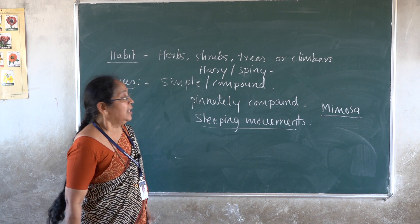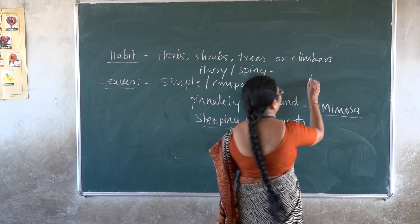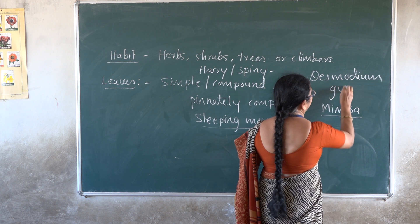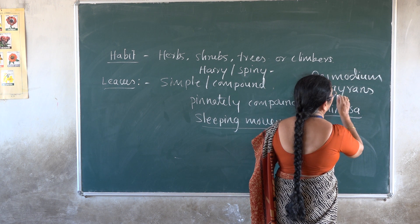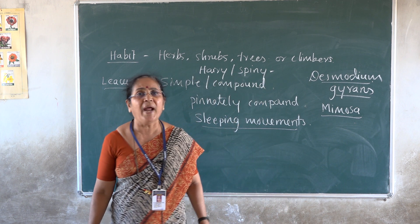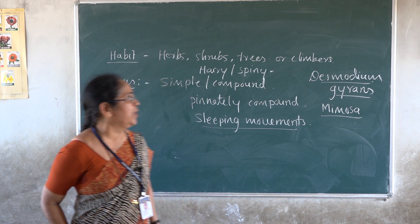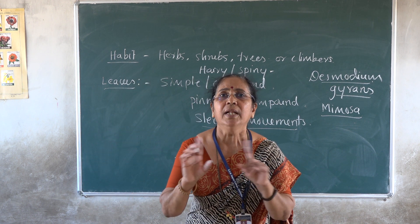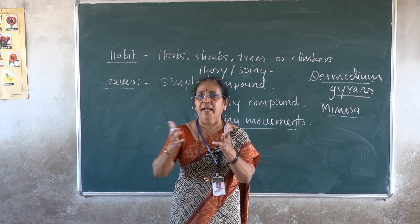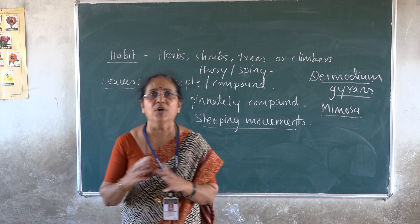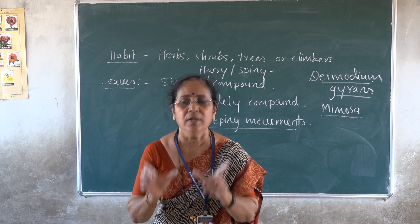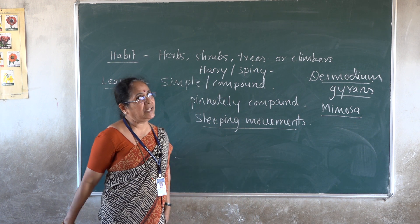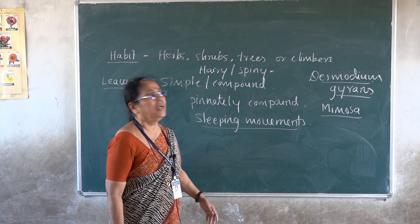There is another plant called Desmodium gyrans, common name Indian telegraph plant. In Desmodium gyrans, each compound leaf has three leaflets. The two lateral leaflets show rhythmic up-and-down movement as day temperature increases — they move up and down due to fluctuation in temperature. That is why it is called the Indian telegraph plant.